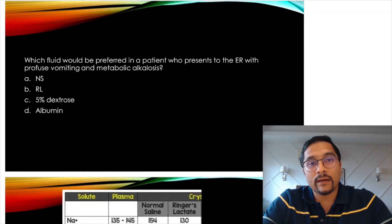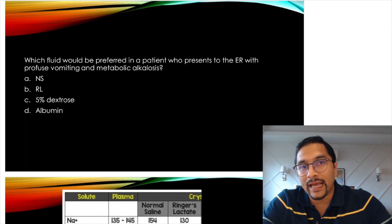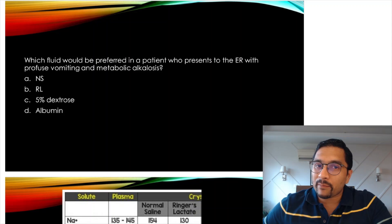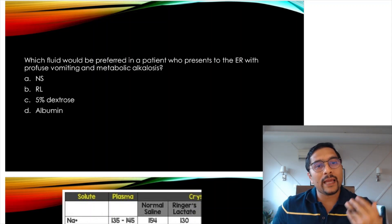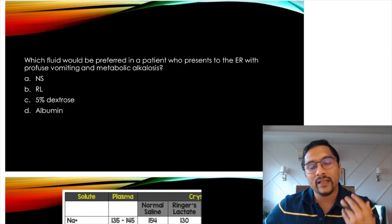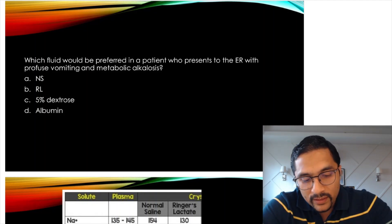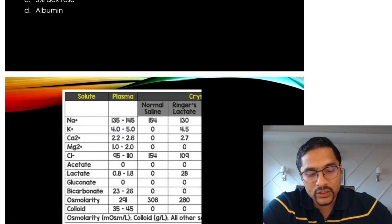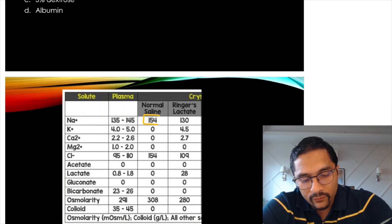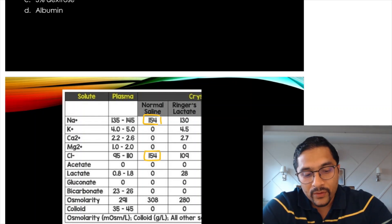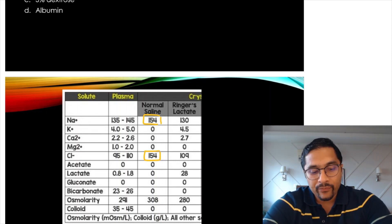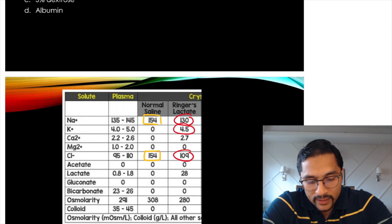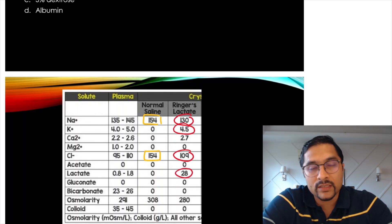Which fluid will you prefer in a patient who comes to the emergency room with profuse vomiting and metabolic alkalosis? Take a child with hypertrophic pyloric stenosis — the metabolic abnormality is hypokalemic, hypochloremic metabolic alkalosis. The best fluid is normal saline. Normal saline has 154 mEq of sodium and 154 mEq of chloride. Ringer's lactate composition: 130 mEq sodium, 4.5 mEq potassium, 109 mEq chloride, and 28 mEq lactate.